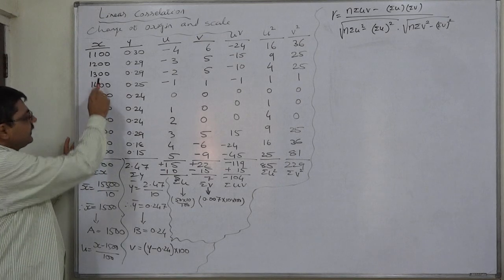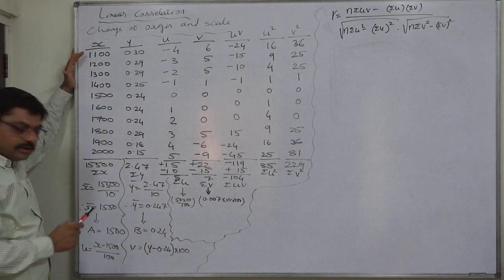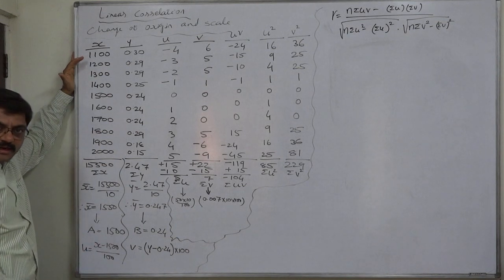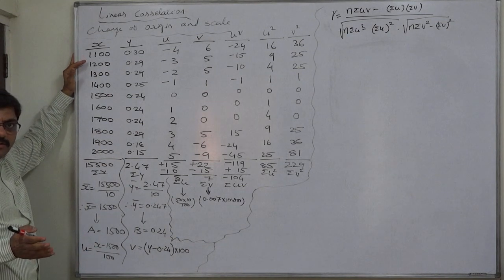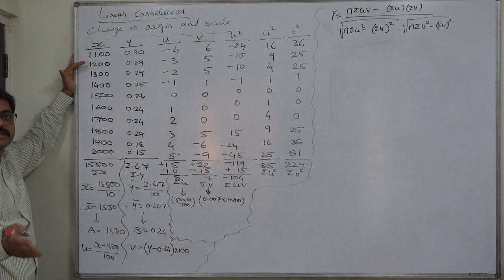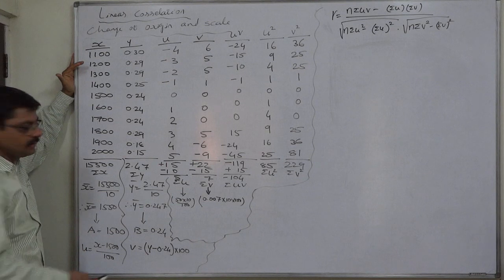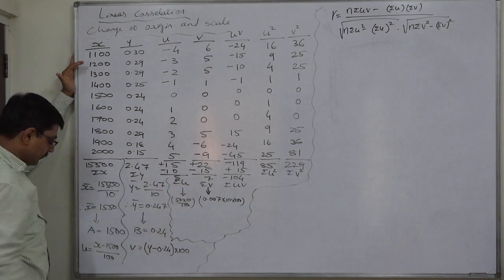The unit digit and tens digit are zero in all cases, so we're going to take the assumed mean as 1,500 and not as 1,550. We're going to use an assumed mean which is less than the arithmetic mean, which will give us a positive total for the new variable u.